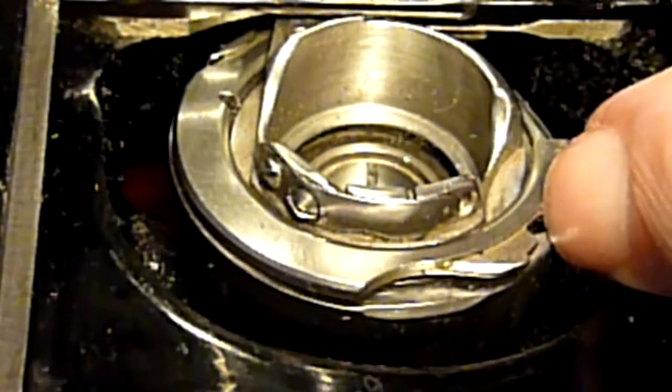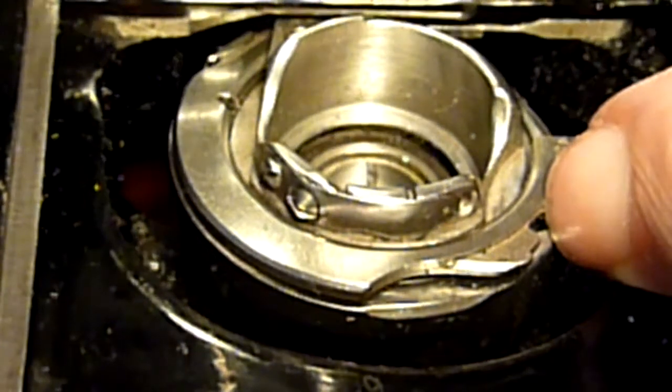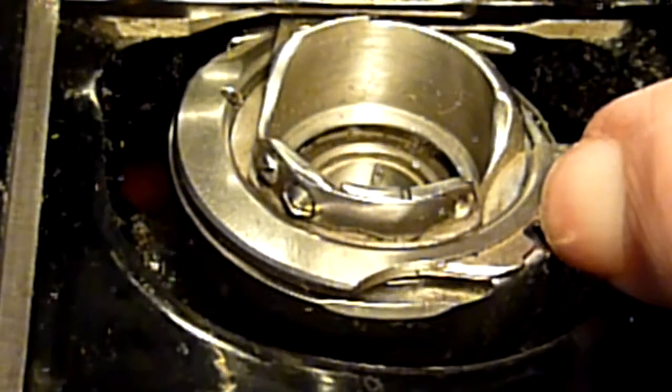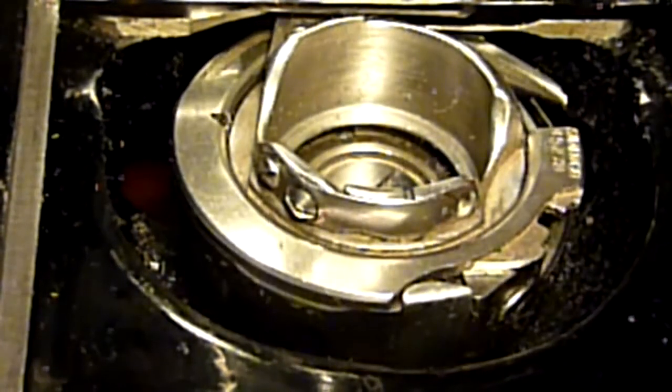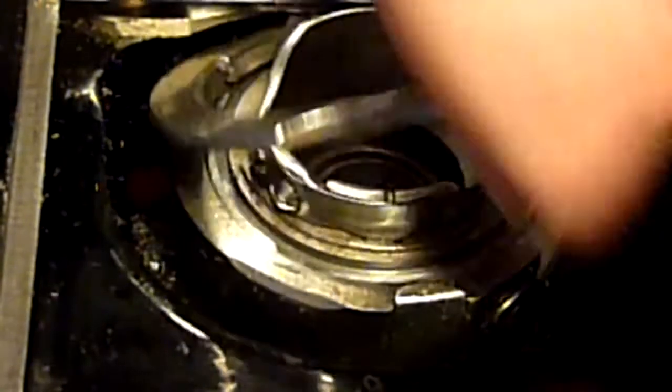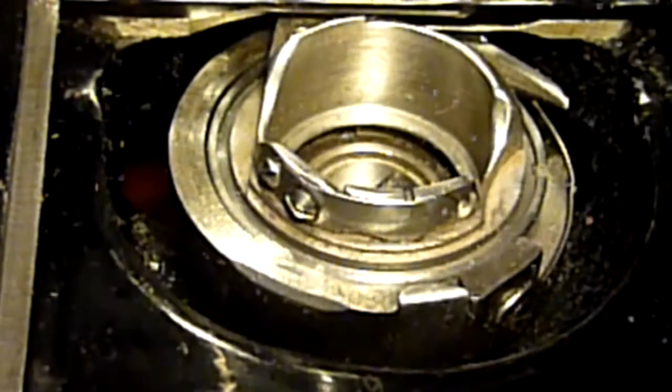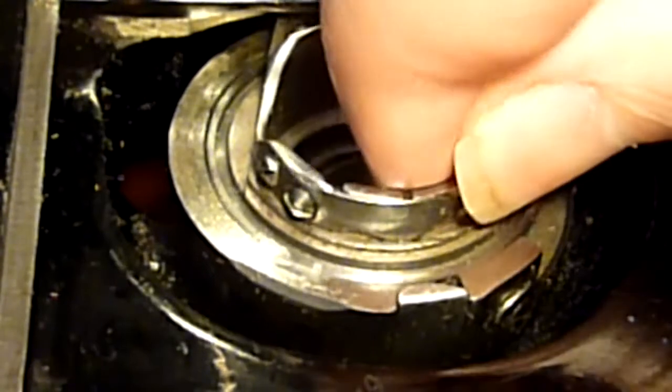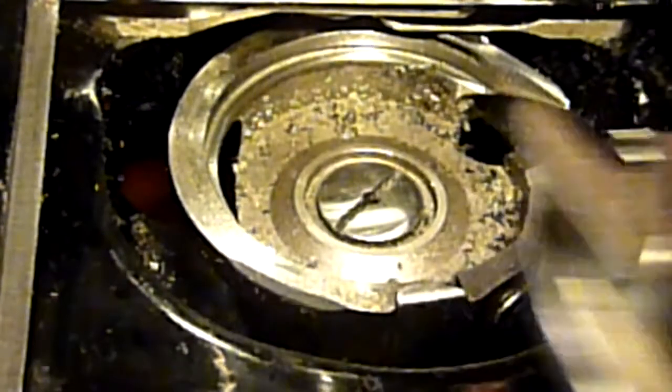And then you turn with your right hand the flywheel counterclockwise. And now the ring is loose. You can lift out the ring and you can lift out the bobbin case.